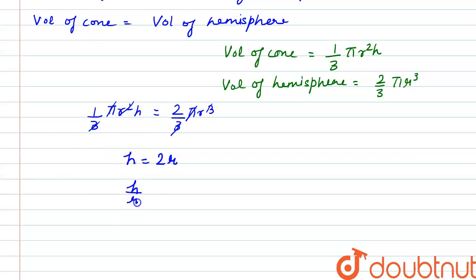Or we can say that H by R is equal to 2. So here H is the height of the cone, and R is the radius of hemisphere, or this is also equal to height of hemisphere.